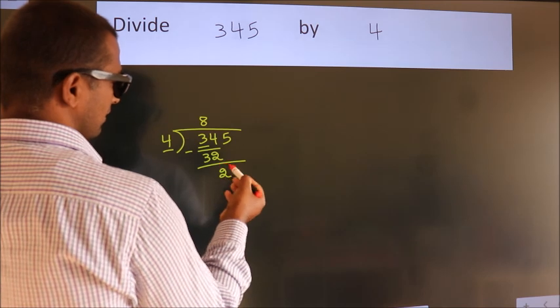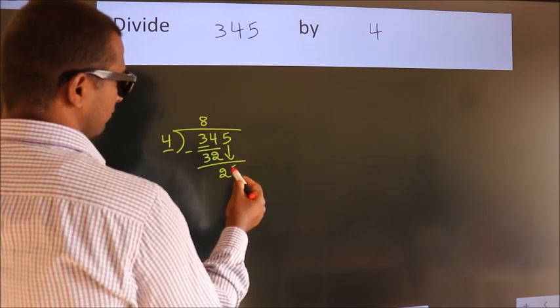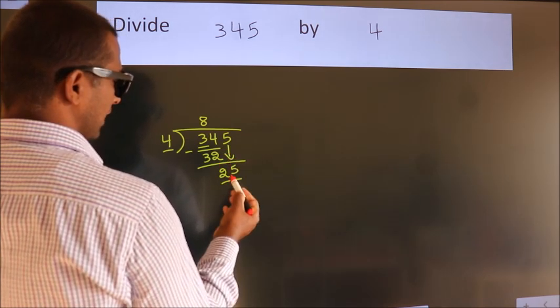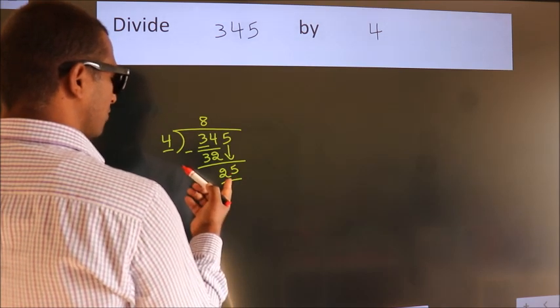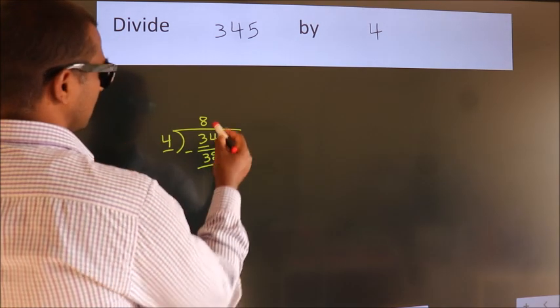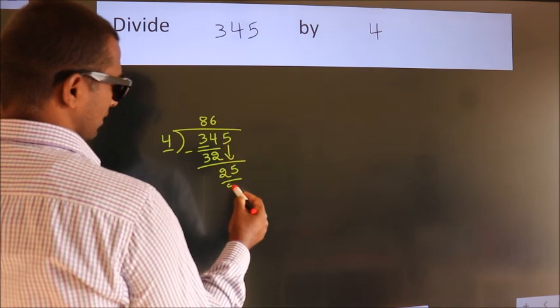After this, bring down the beside number. So 5 down, so 25. A number close to 25 in 4 table is 4 times 6, 24.